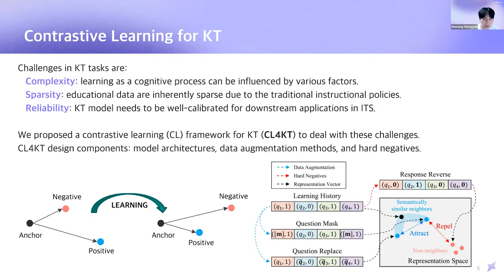There are several challenges in knowledge tracing tasks: complexity, sparsity, and reliability. To deal with those challenges, we propose a contrastive learning framework for knowledge tracing, for short, CL4KT. We carefully designed the components of CL4KT, such as model architectures, data augmentation method, and hard negatives to reflect the unique characteristics of the education domain.